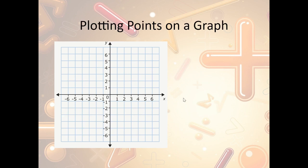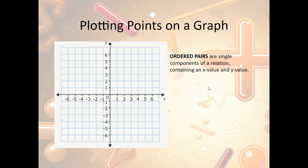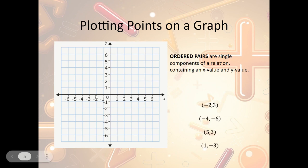How do we plot points on the graph? We're given ordered pairs. Ordered pairs are single components of a relation containing an x value and a y value — we're given an x and a y. For instance, the ordered pair negative 2, 3 — x goes first, then y. Remember they go in alphabetical order: x then y. So x is negative 2, so I go along the x-axis and find negative 2. And y is 3, so I go up to 3 on the y-axis, and I plot my point at negative 2, 3.